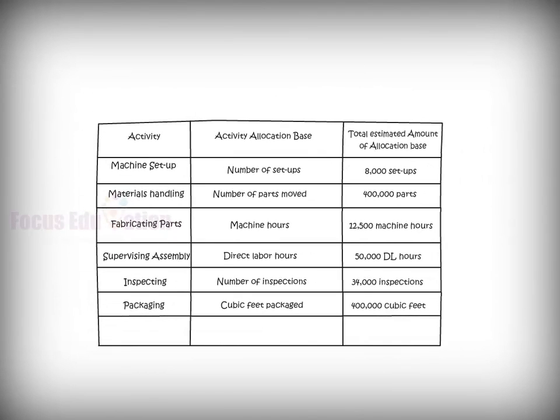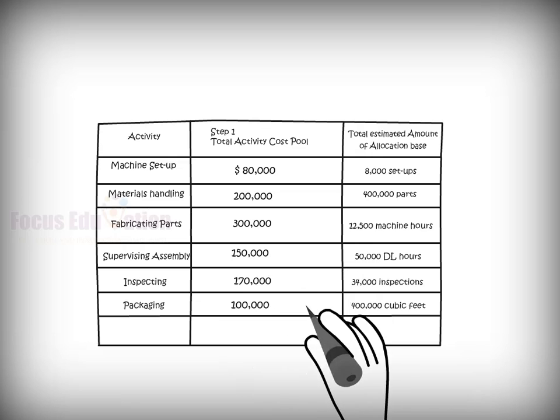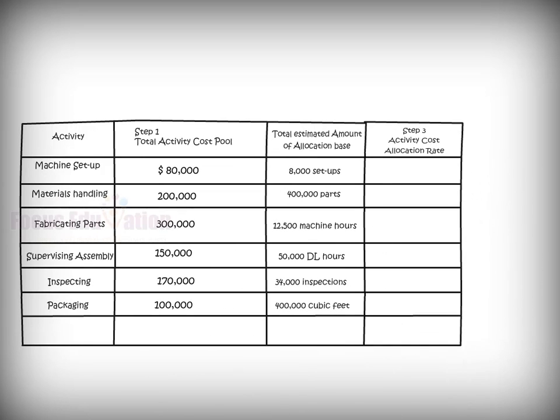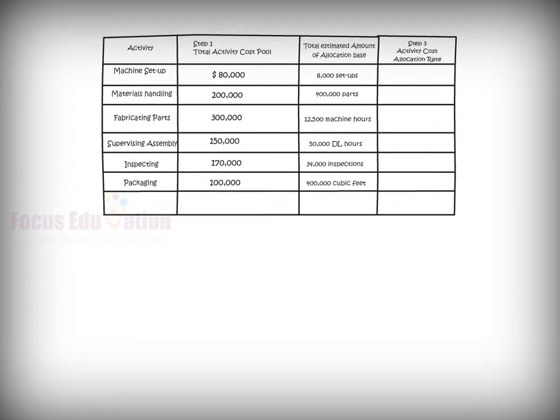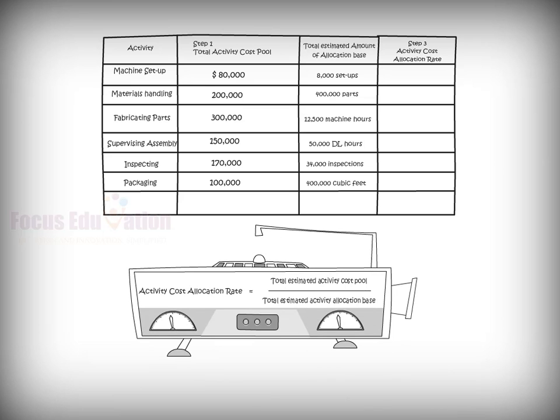After selecting an allocation base for each activity, the company calculates its activity cost allocation rates for each activity as the third step. They do so with the help of a formula, which divides the total estimated activity cost pool by the total estimated activity allocation base.